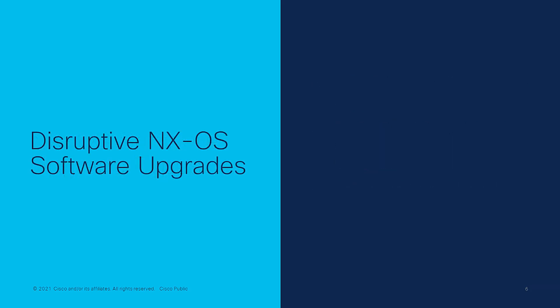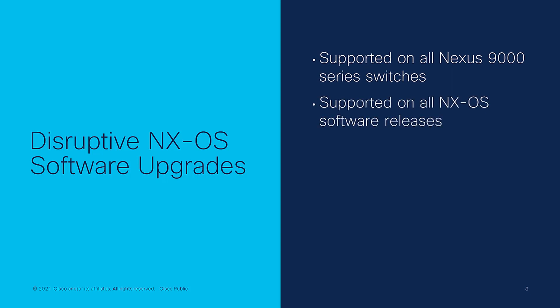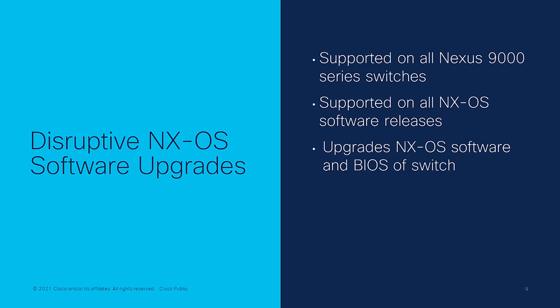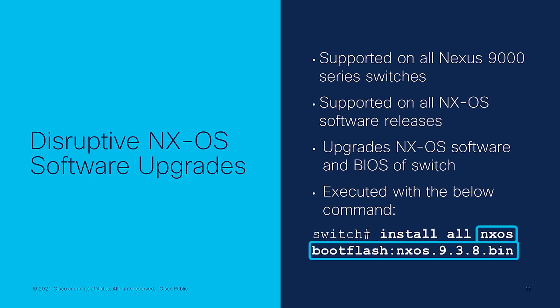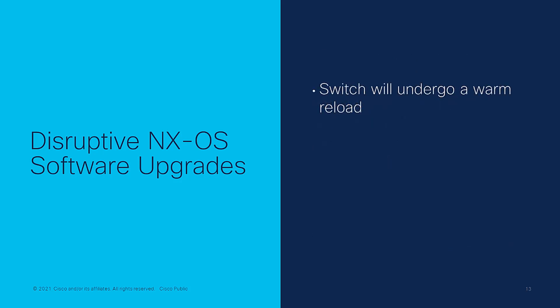First, let's cover disruptive NXOS software upgrades. These are the simplest software upgrades to perform and are supported by all Nexus 9000 series switches running any NXOS software release. This upgrade option automatically upgrades the NXOS software running on the switch as well as the BIOS version used by the switch if necessary. You can execute a disruptive NXOS software upgrade using the install all NXOS command, which takes a single parameter: the file path of the target NXOS software release binary image file that you would like to upgrade to.